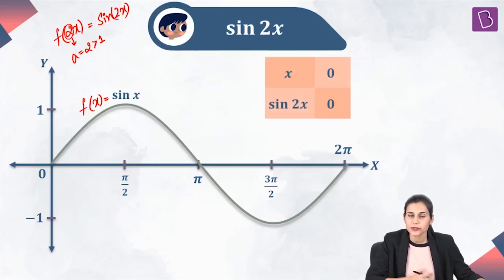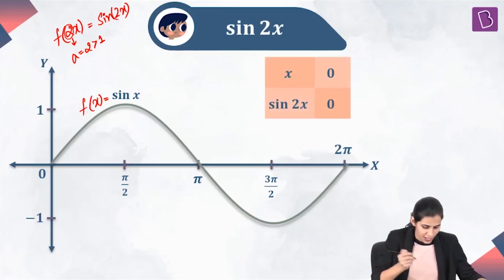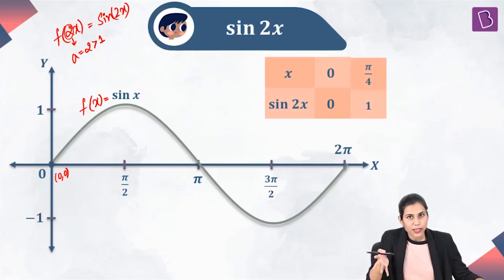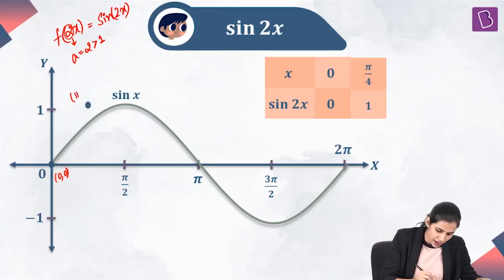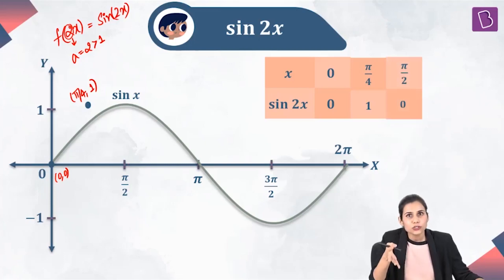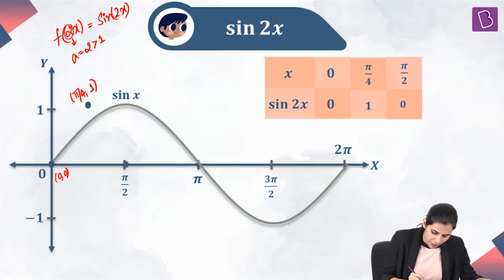If I take x = 0, sin(2x) becomes sin(0), which is 0. So I get the point (0, 0). Next, if I take x = π/4, sin(2x) becomes sin(π/2), which is 1, giving the point (π/4, 1). Next, if I take x = π/2, sin(2x) becomes sin(π), which is 0. So I get the point (π/2, 0).